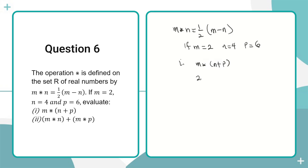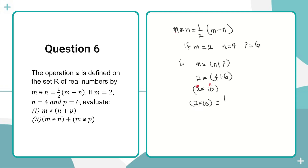First we substitute the values: m is 2, n is 4, and p is 6. So n + p = 4 + 6 = 10, giving us 2★10. Wherever we find m we replace it with 2, and wherever we find n we replace it with 10 in the operation. So 2★10 = ½(2 − 10).